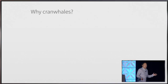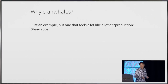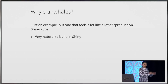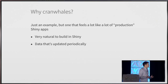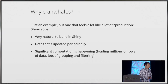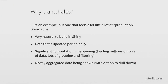So why am I showing this fun little example app? It's just an example, but there are things about it that feel a lot like production Shiny apps. Number one, this kind of app is very natural to build in Shiny — kind of down the middle of what Shiny is good for. Number two, a lot of production apps have data that is updated over time, often on a predictable schedule — the CRAN logs are dumped once a day. Number three, there's significant computation happening. When the application loaded, it took maybe eight or ten seconds, loading hundreds of megabytes of CSV data and doing lots of grouping and filtering.